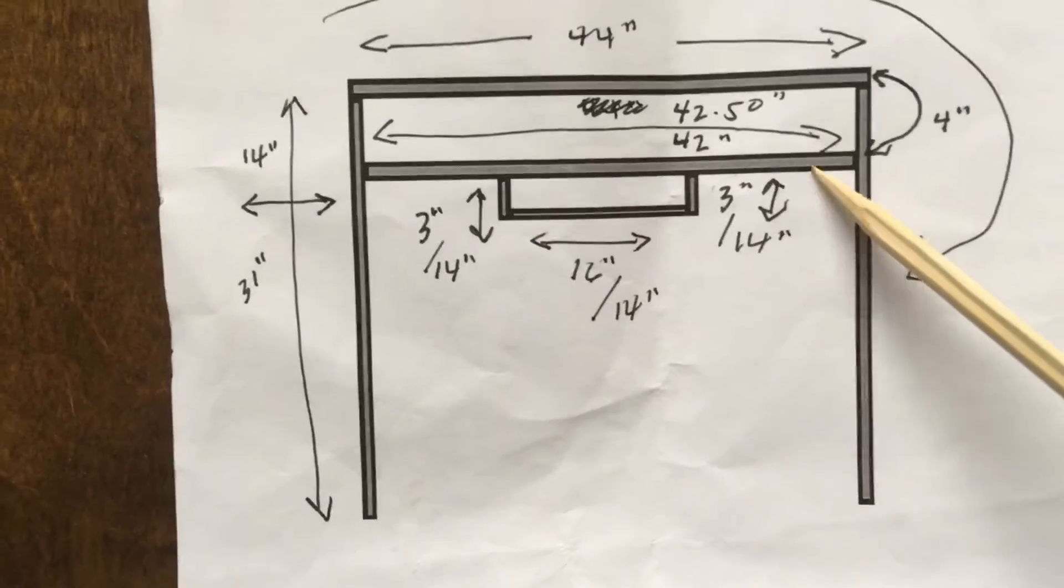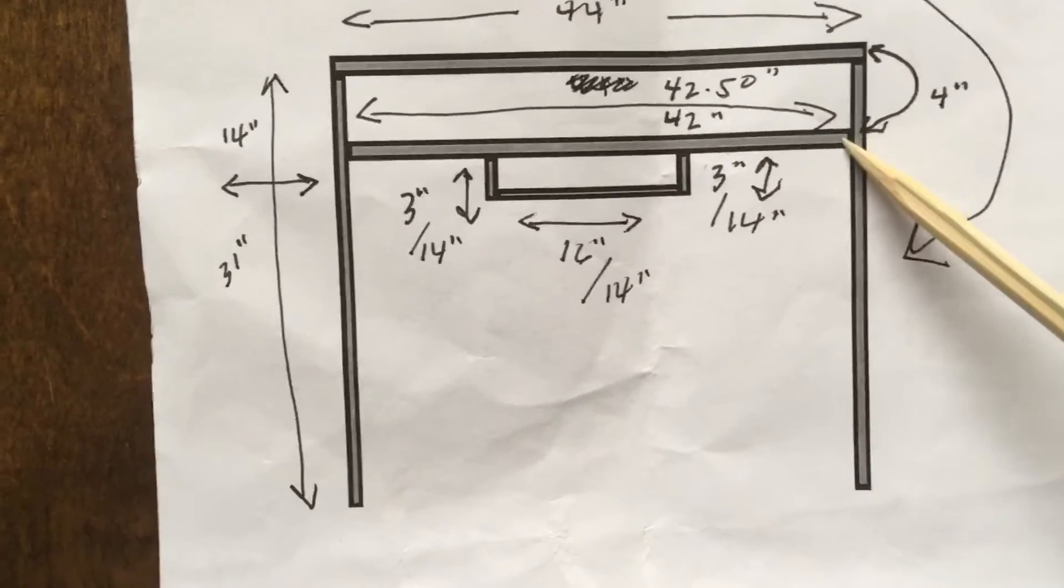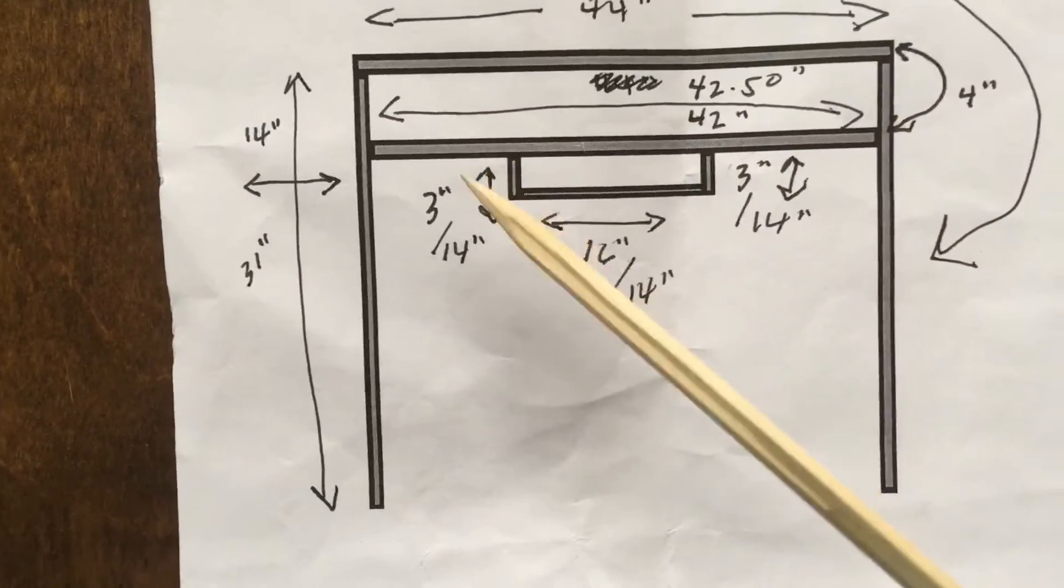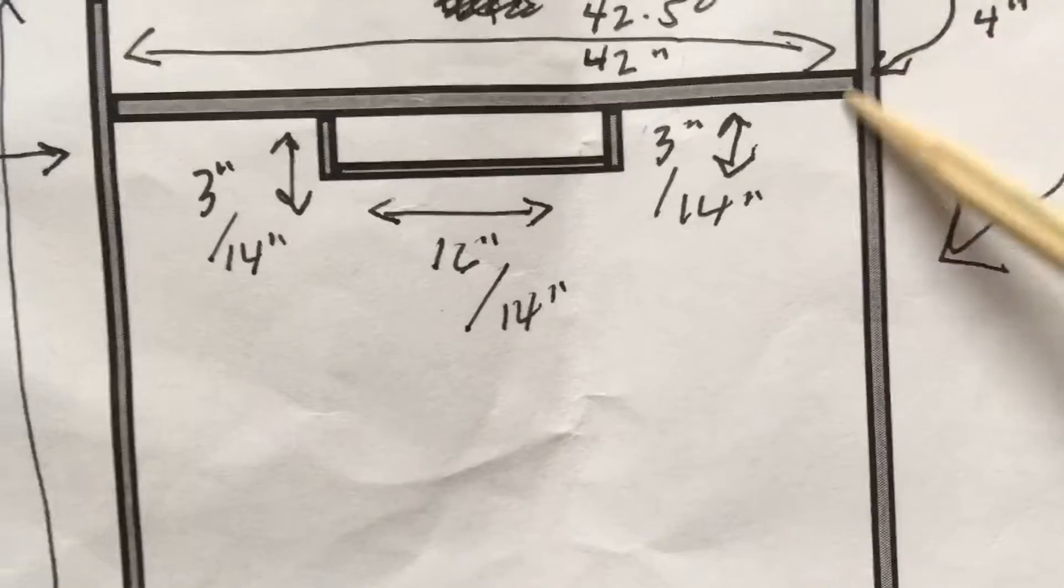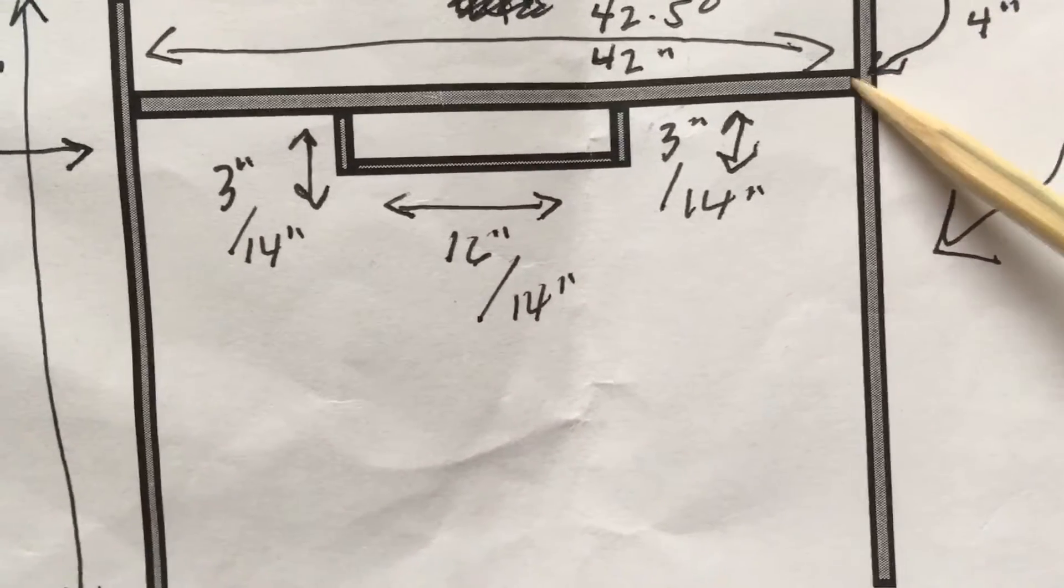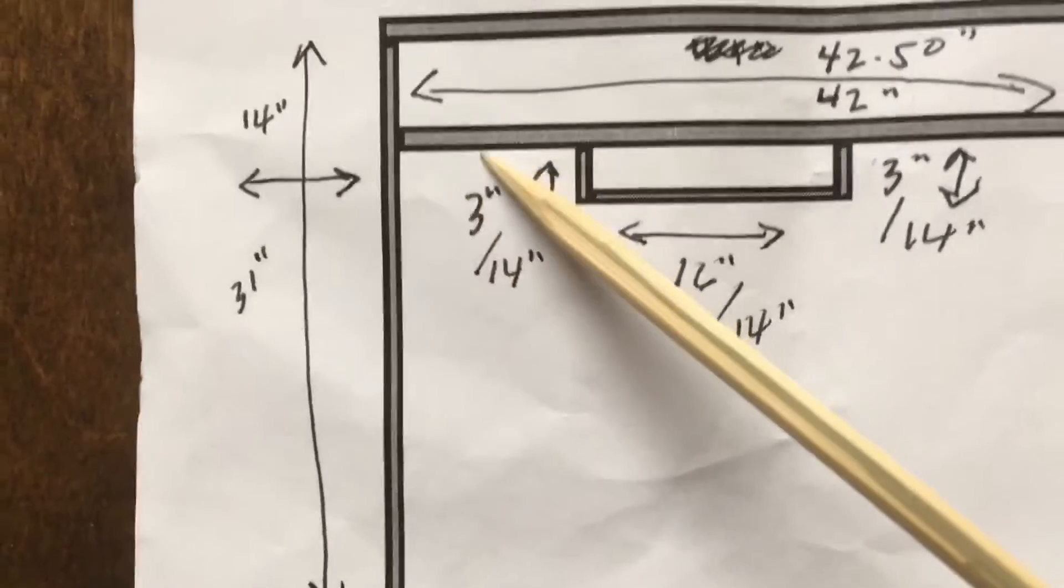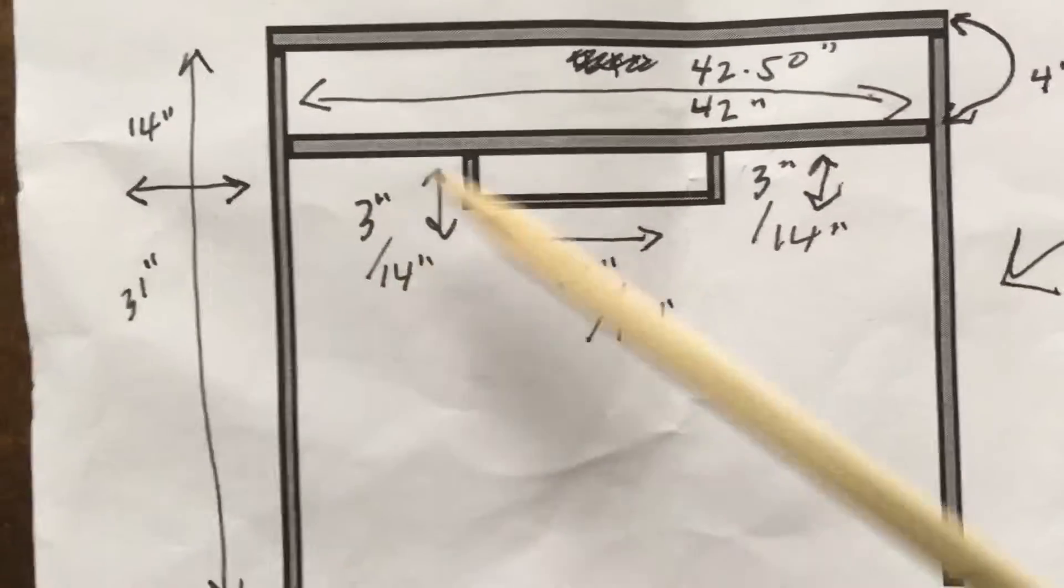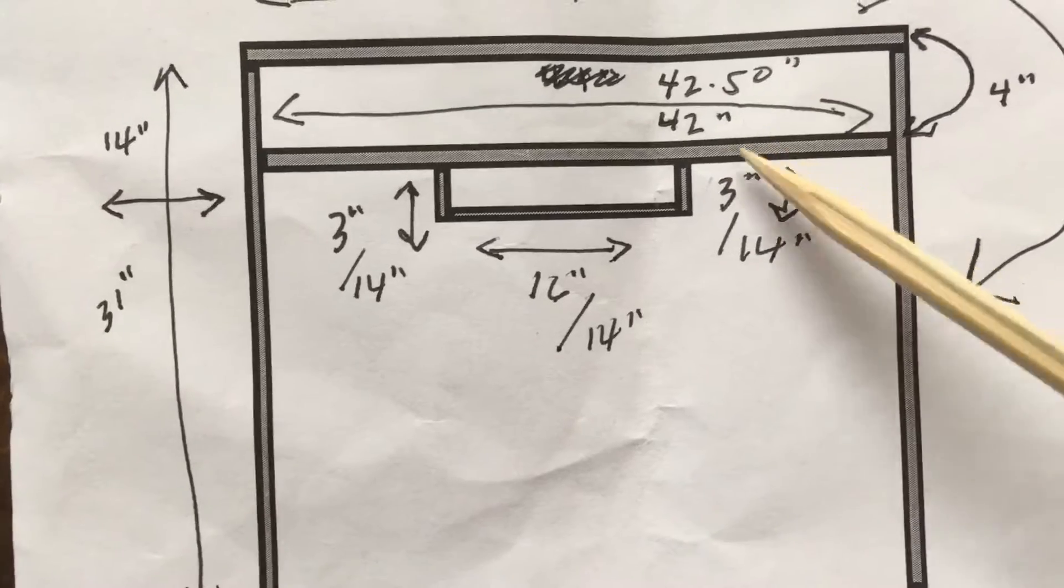So my inner piece, I have to subtract basically an inch and a half off of this 44, so that'll fit in there nicely. Here I have my individual panels broken down.